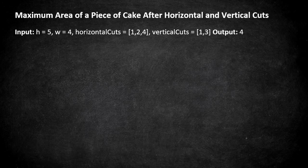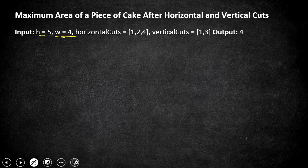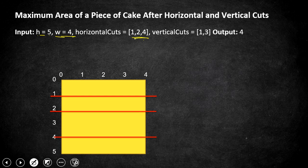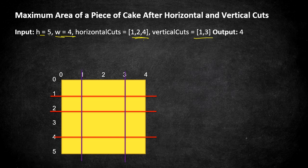Let's understand this problem with an example. The given height and width are 5 and 4, so we have a rectangular cake of height 5 and width 4. We are going to cut the cake horizontally at positions 1, 2, and 4, and vertically at positions 1 and 3.